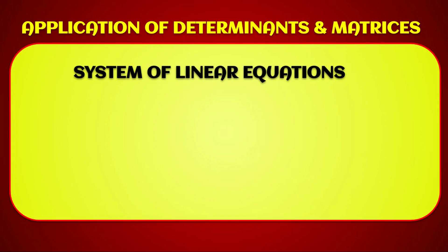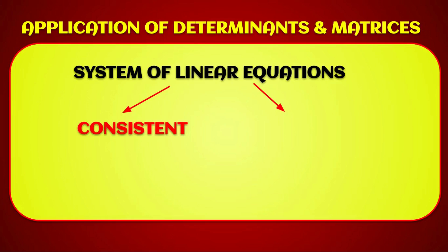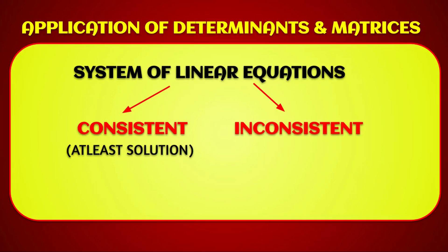There are two types of systems. One is a consistent linear system, which has at least one solution. The other is inconsistent, which means it has no solution.